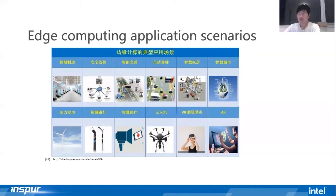The typical scenarios listed here all have edge computing features. We can predict that in the future, edge computing and cloud computing will be the two important supports for the digital transformation of industry. The synergy between the two in terms of network, business, and application intelligence will help support a wider range of solutions and greater value creation.